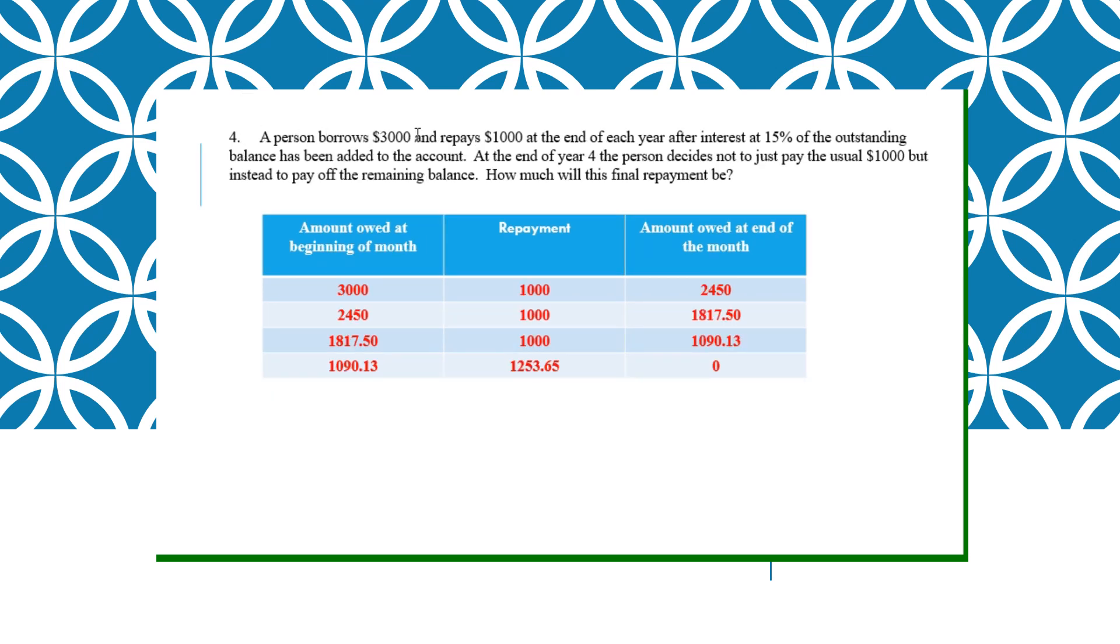A person borrows $3,000 and repays $1,000 at the end of each year, 15% per year. So at the end of the fourth year, a person decides not to just pay back the usual $1,000 but he wants to settle the whole thing. So you do for 3 years and whatever that's balanced, you charge interest to it and that will be your final repayment.